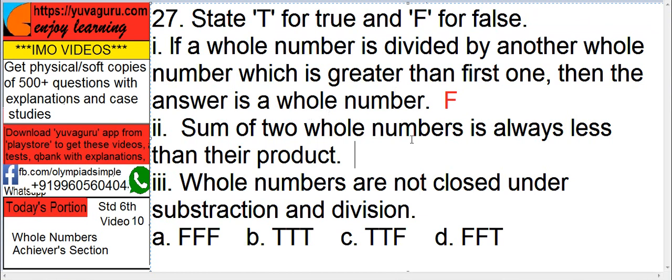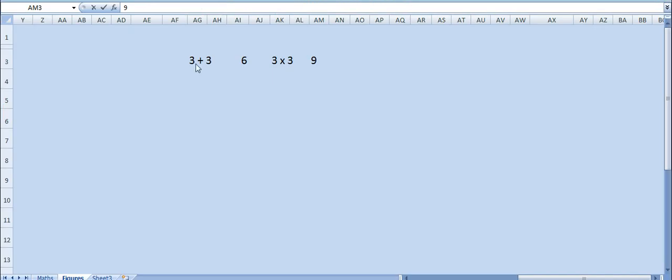Sum of two whole numbers is always less than their product. 3 plus 3 is 6. 3 times 3 is 9. Here it is correct. But 1 plus 1 is 2. 1 times 1 is 1. So here it is not correct.